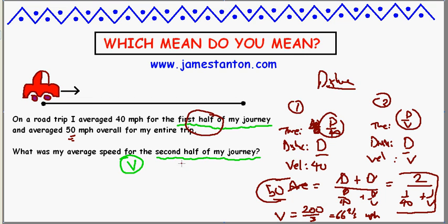So it does matter how I interpret what first half means. If I mean time-wise, I get the answer given by literally the average of the two velocities, 40 plus v over 2 is 50. Or if I interpret it in terms of half the distance, then I get this weird formula, 2 over 1 over the velocity plus 1 over the other velocity is the average velocity.